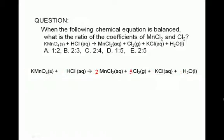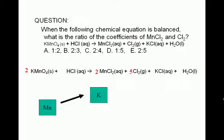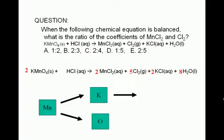Here is a summary of the sequence we can follow for balancing after we have established the coefficient ratio of the reduction and oxidation products. First, balance manganese by setting the coefficient of potassium permanganate to 2. Once manganese is balanced, we can balance potassium by setting the coefficient of potassium chloride to 2, and balance oxygen by setting the coefficient of water to 8. Once potassium is balanced, we can balance chlorine and hydrogen by setting the coefficient of hydrochloric acid to 16.